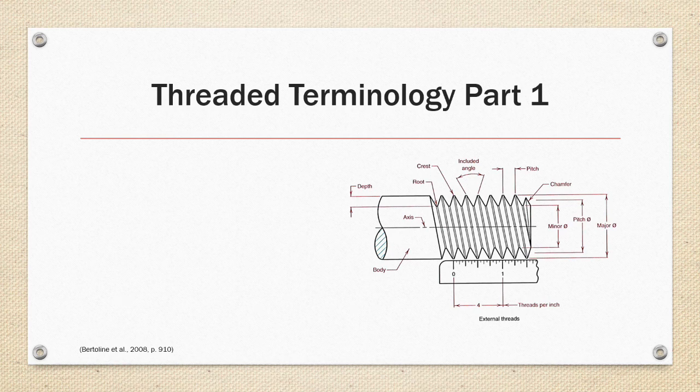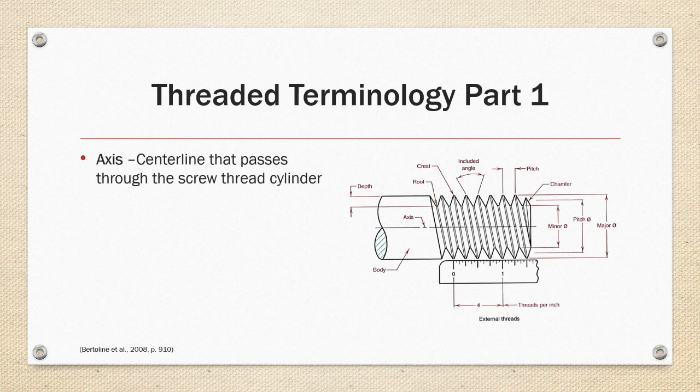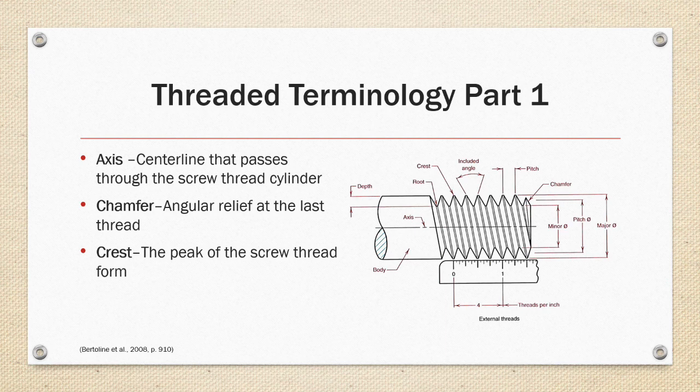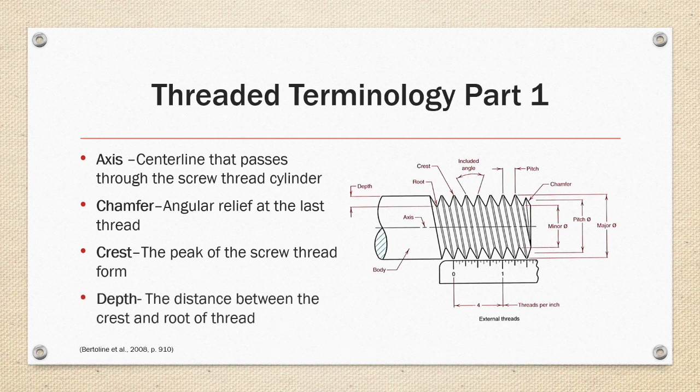Threaded Terminology Part 1. Axis is the centerline that passes through the screw thread center. Chamfer, an angular relief at the last thread that facilitates the mating of the thread with its opposite thread. Thread crest is the peak of the screw thread profile form. Depth is the distance between the crest and the root of the thread.